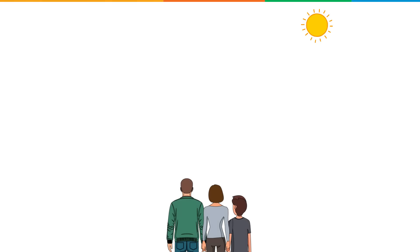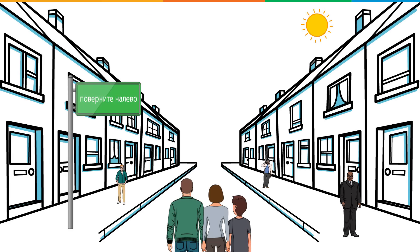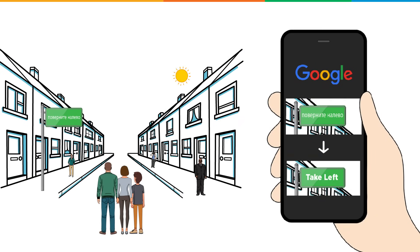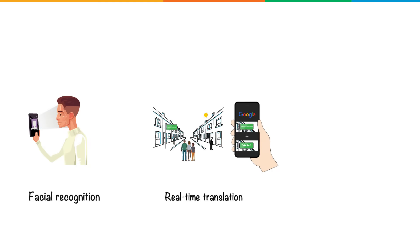Last summer, my family and I visited Russia. Even though none of us could read Russian, we did not have any trouble figuring our way out, all thanks to Google's real-time translation of Russian boards into English. This is just one of the several applications of neural networks.